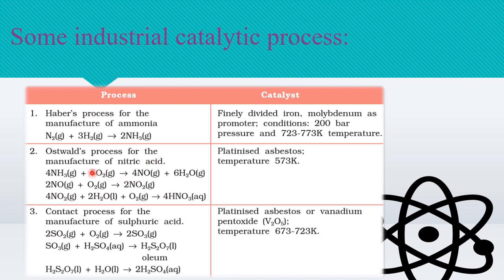The Oswald process is for the manufacturing of nitric acid. These are the steps involved: we use platinized asbestos at different temperatures such as 573 Kelvin. Temperature, pressure, and catalyst are very important conditions that you need to take care of to obtain the required product.